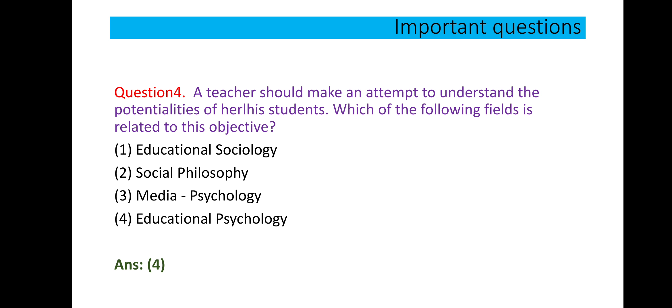Now let's see, so teacher and students - the teacher should make an attempt to understand the potential. So potential means they are talking about behavior - how the teacher will monitor the behavior or potential of their students. So this is psychology, right? So option 4 is correct: educational psychology.